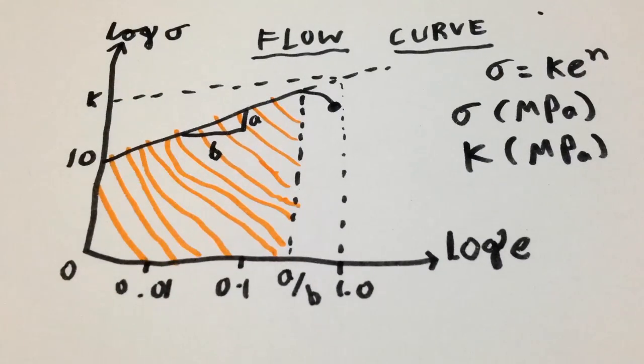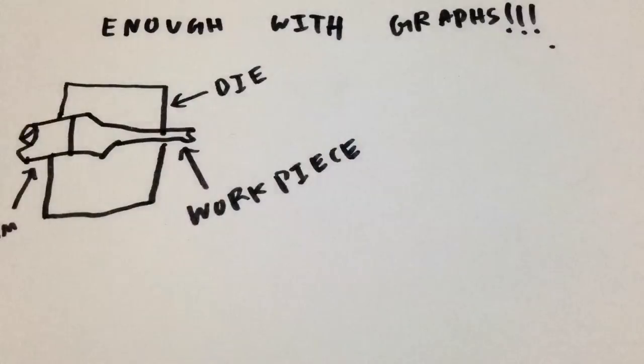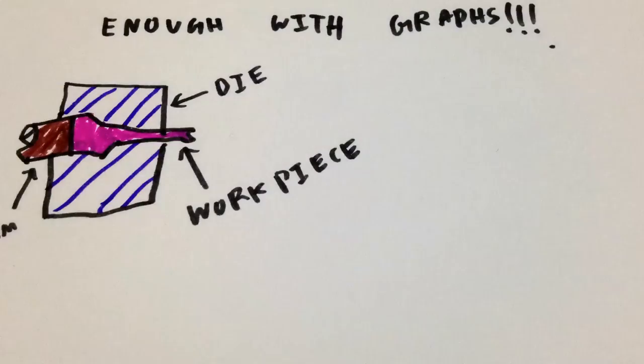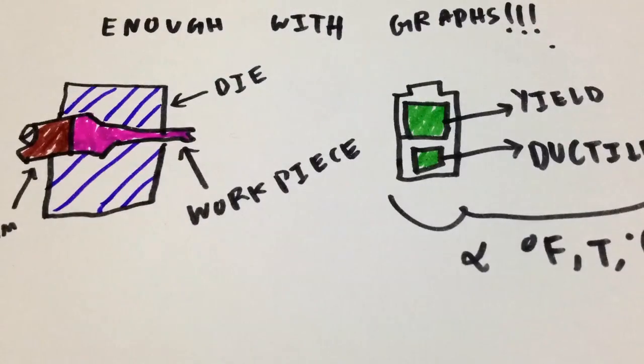Metal forming makes use of this theory of plasticity to deform a workpiece. A typical process normally consists of a die which applies stress to the material to exceed its yield strength. The two desirable properties of metal forming, low yield strength and high ductility are highly affected by temperature.